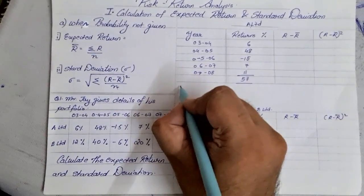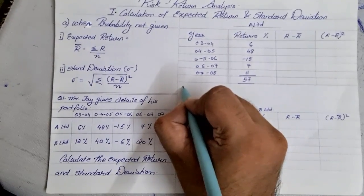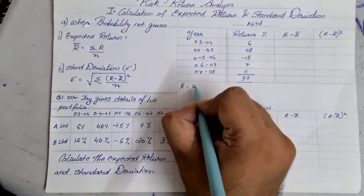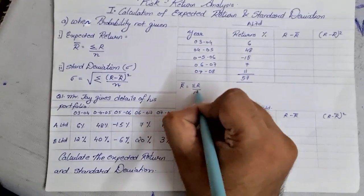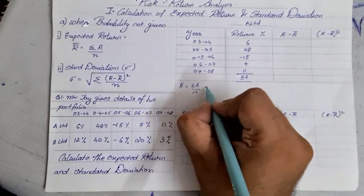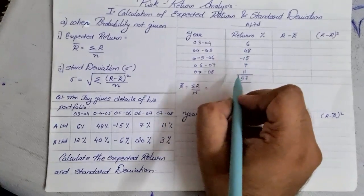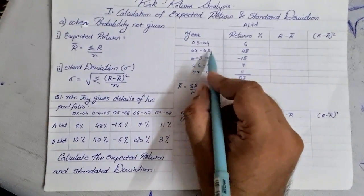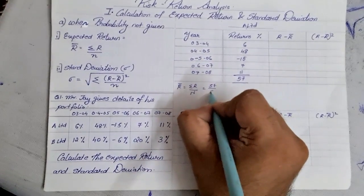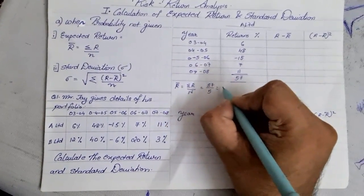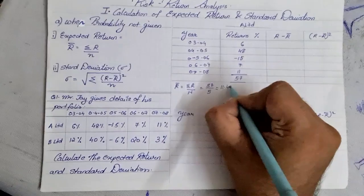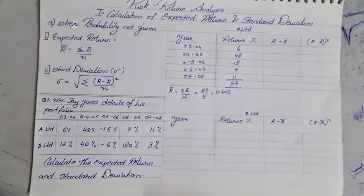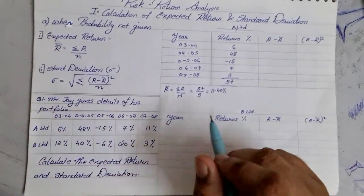The first thing we need to find is the expected return. Expected return is r̄ = Σr/n, where the total of r is 57. The number of observations is 5. When you divide, we get a value of 11.40%. So our expected return is 11.40%.